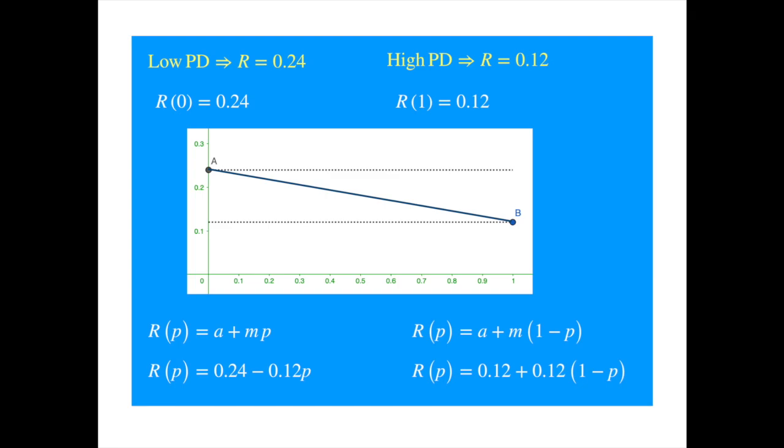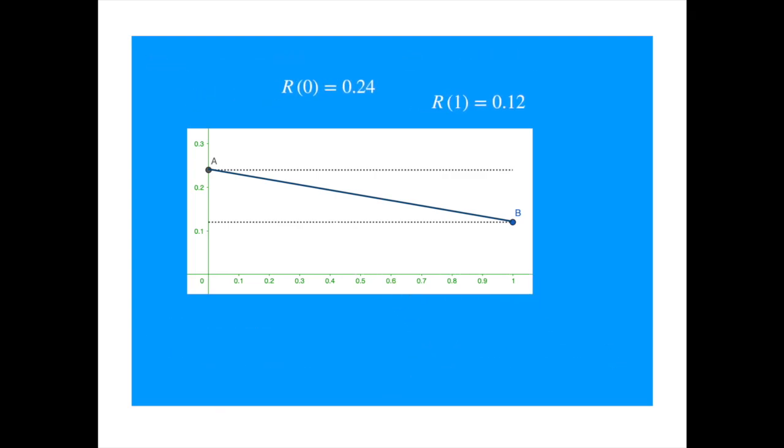But again, we are assuming that the R varies linearly with the probability of default. The theory and survey results suggest that the relationship between the probability of default and R is not linear. For example, one can assume an exponential relationship. To accommodate this assumption, we can replace 1 minus the probability of default by the exponential of negative probability of default.